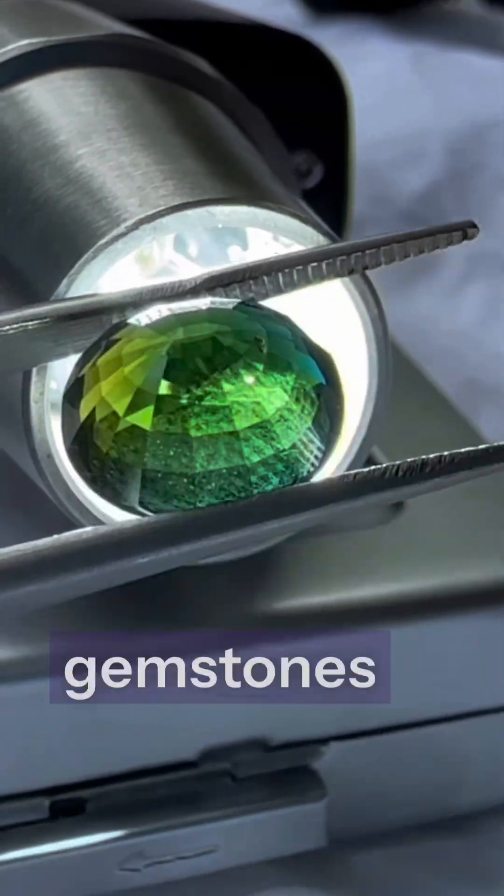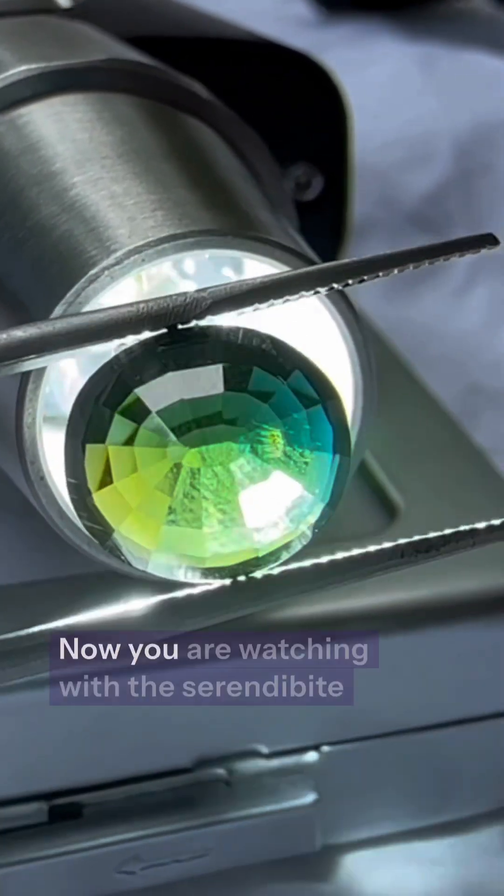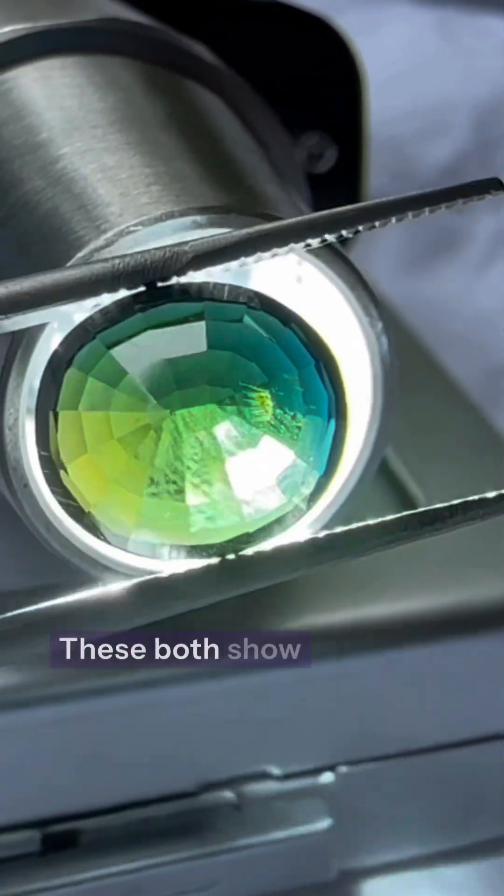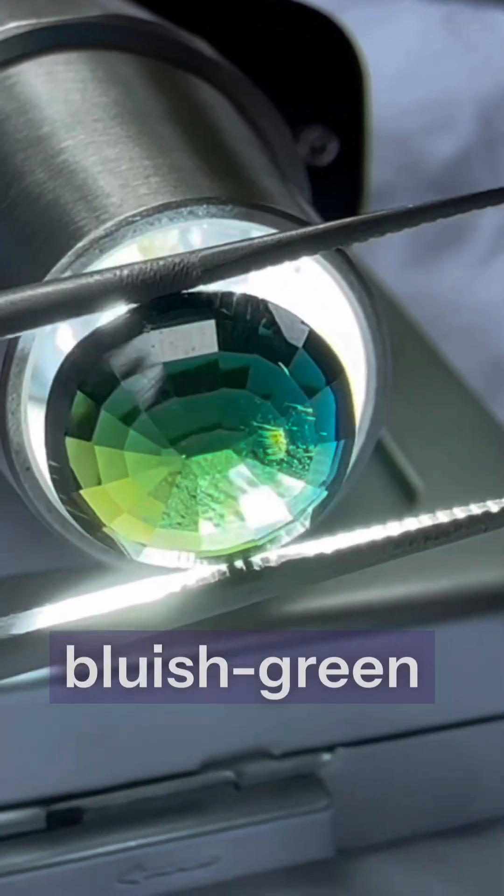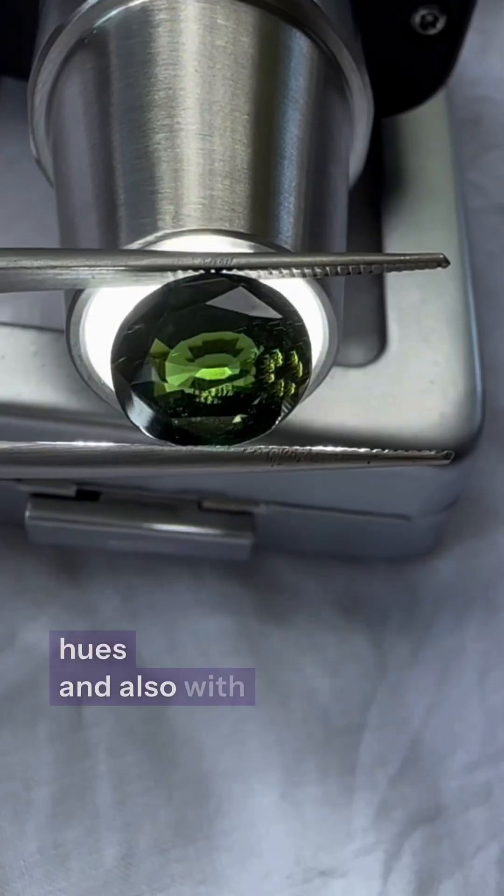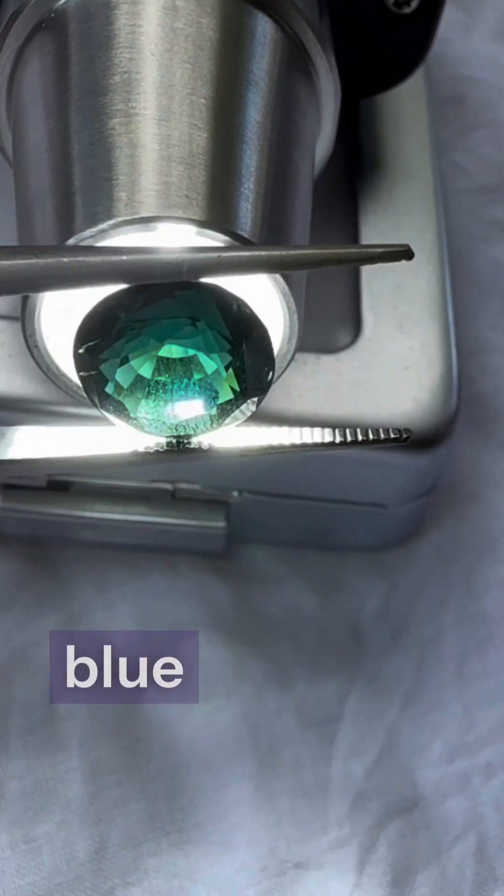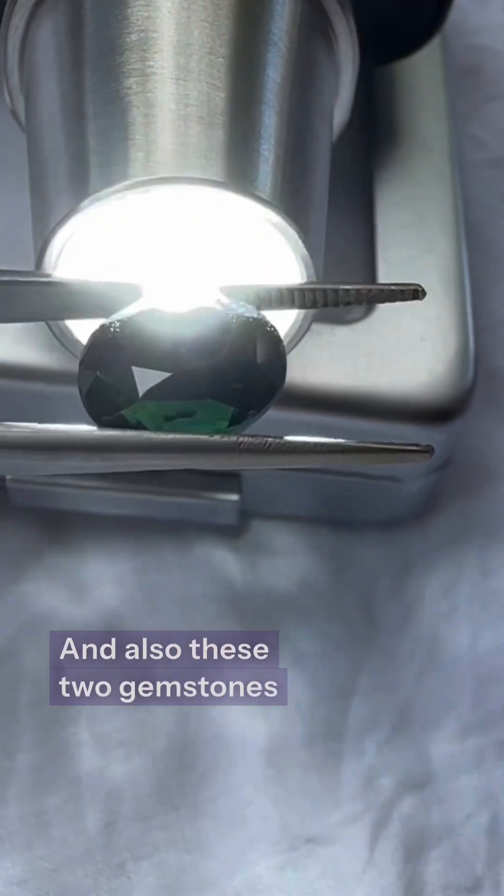These two gemstones are very confusing. Now you are watching the serendibite gemstone. These both show strong pleochroism, can appear in green, bluish green, and blue hues, and also with yellow mixed blue. And also, these two gemstones are very close in hardness, 6.5 to 7 on the Mohs scale.